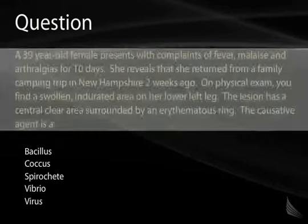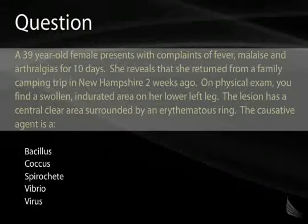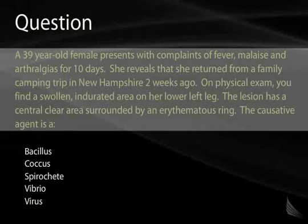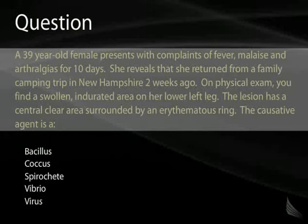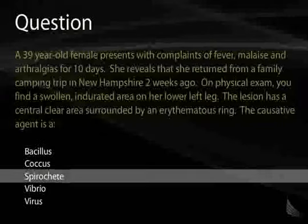Case question: a 39-year-old female presents with fever, malaise, and arthralgias for 10 days after a camping trip in New Hampshire two weeks ago. On exam, there is a swollen, indurated area on her left leg with a central clear area surrounded by an erythematous ring. This is the classic description of stage 1 Lyme disease with erythema migrans and tick exposure. The causative agent is Borrelia burgdorferi — a spirochete, not a bacillus, coccus, vibrio, or virus.